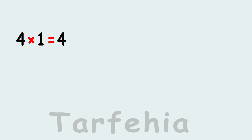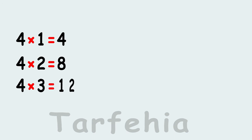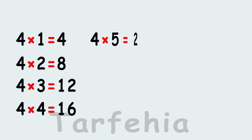Four times one equals four. Four times two equals eight. Four times three equals twelve. Four times four equals sixteen. Four times five equals twenty.